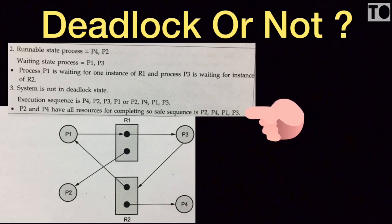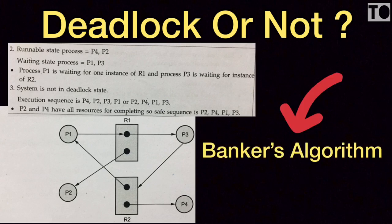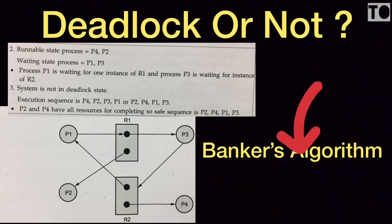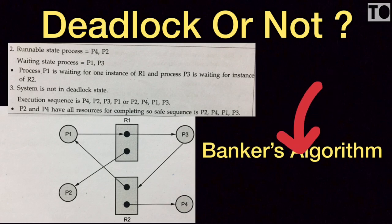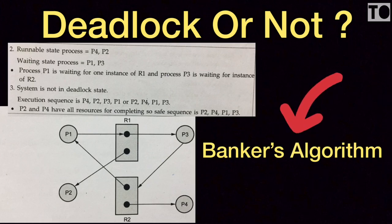P2 and P4 having all resources for completion means the safe state sequence is P2, P4, P1, P3. P2 is first, then P4, then P1, then P3. The request is not false — the safe sequence is P2, P4, P1, P3. This is the safe sequence.